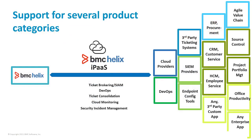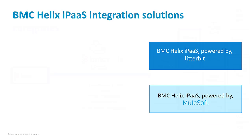Use BMC Helix iPass to integrate applications from different product categories like cloud providers, DevOps tools, and ticketing systems. With integration solutions available for two leading integration technology platforms: Jitterbit Harmony and MuleSoft Anypoint Platform.